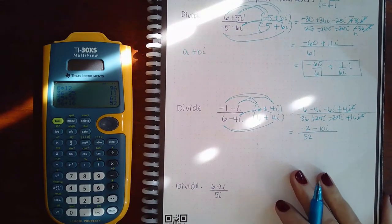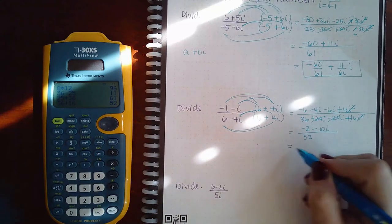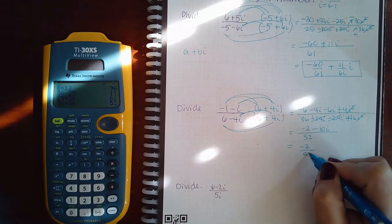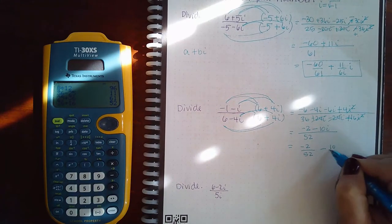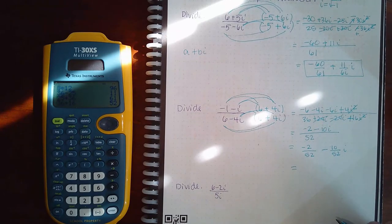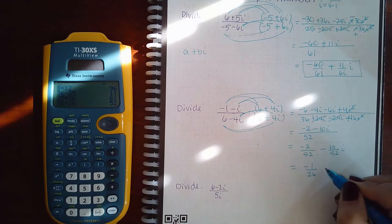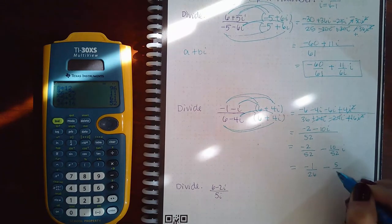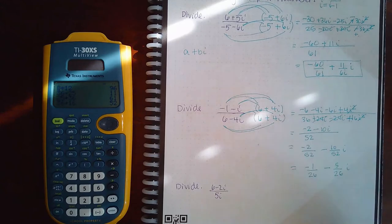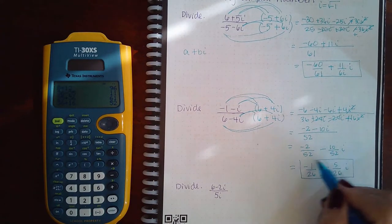So I do need to write it in its a plus bi form. So I'm going to write negative 2 over 52 minus 10 over 52i. But this can be reduced and I must reduce it. So I get negative 1 over 26 and negative 5 over 26 with an i on the side. And this is the response that they're going to want.